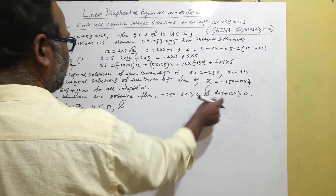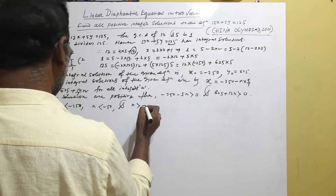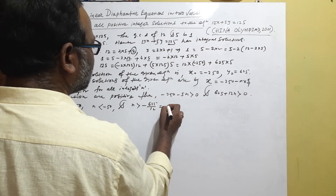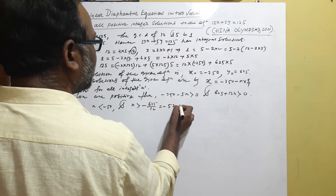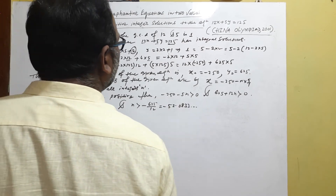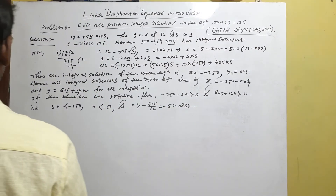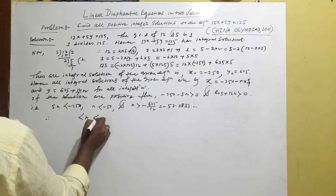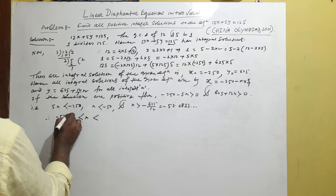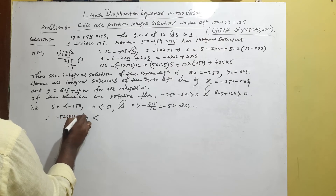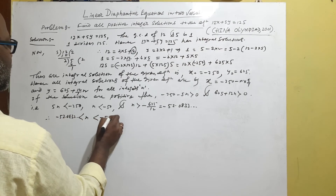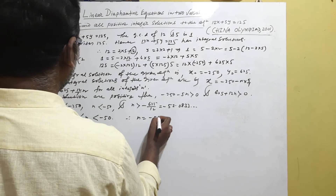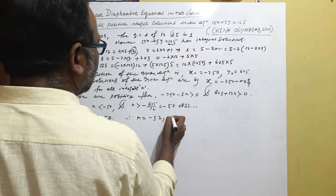From the second inequality, n > -625/12, which is approximately -52.0833. So n must satisfy: -52.0833 < n < -50. Therefore the integer values of n are n = -52 and n = -51.